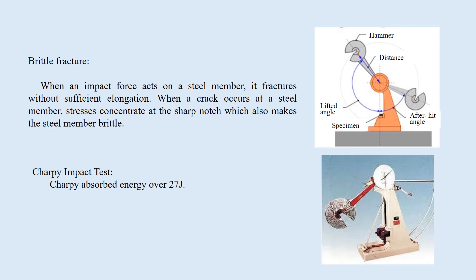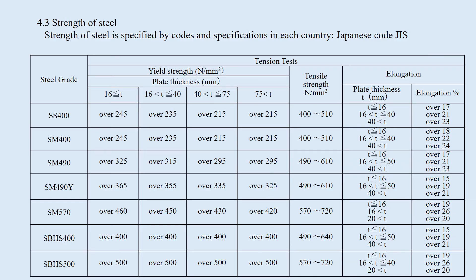This test is illustrated here. Steel plates for bridges are required to have sufficient Charpy absorbed energy of 27 joules. Strength of steel is specified by codes and specifications in each country. This is the Japanese code JIS. Characteristic values of the strength of major steels in Japan are shown in this table, specifying the yield strength, tensile strength, and elongation for each steel grade.